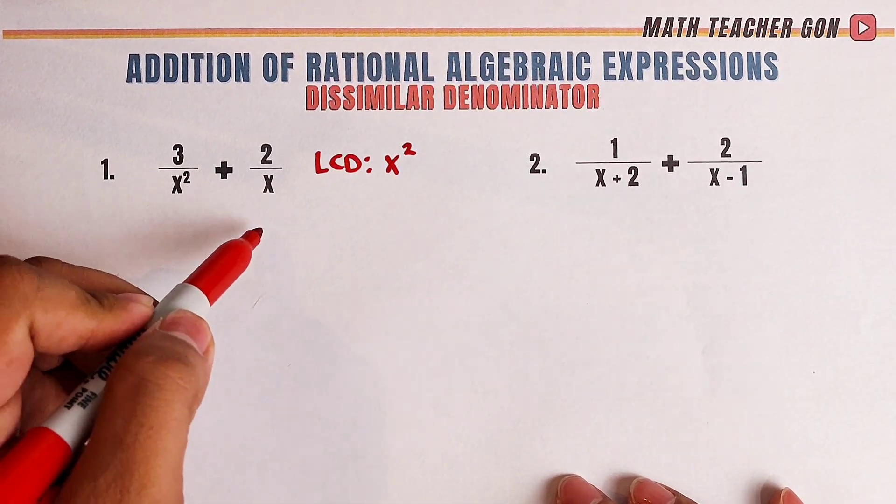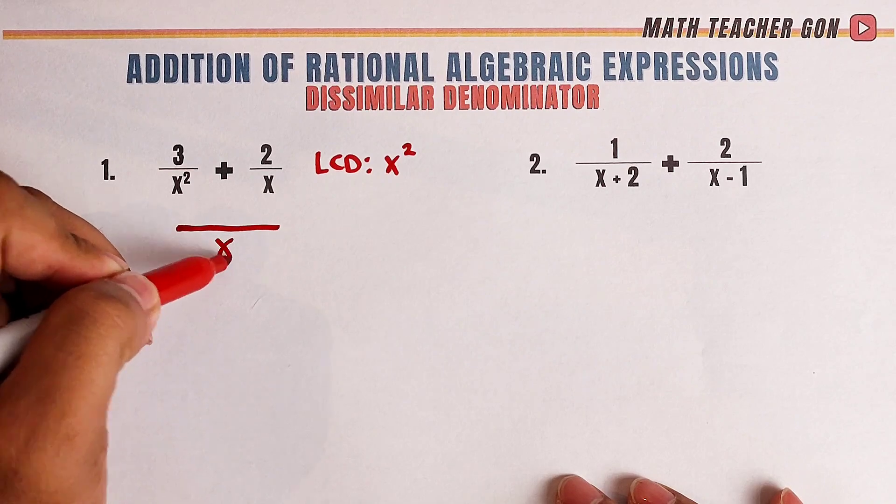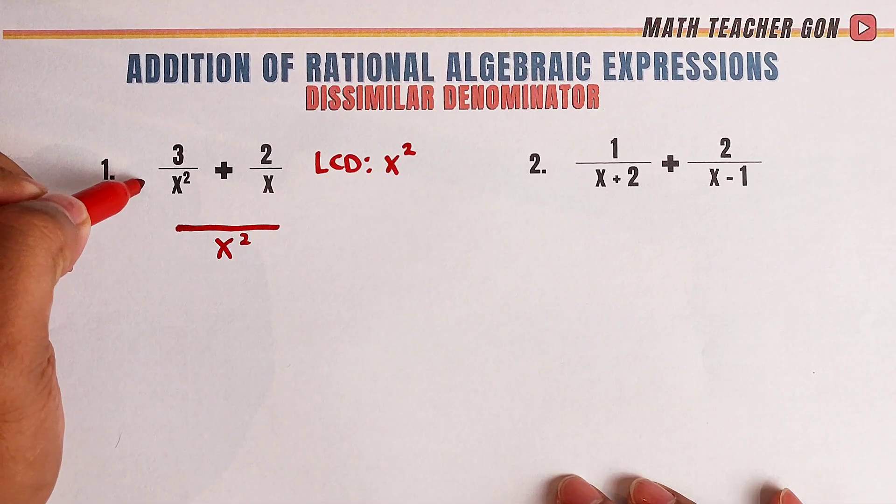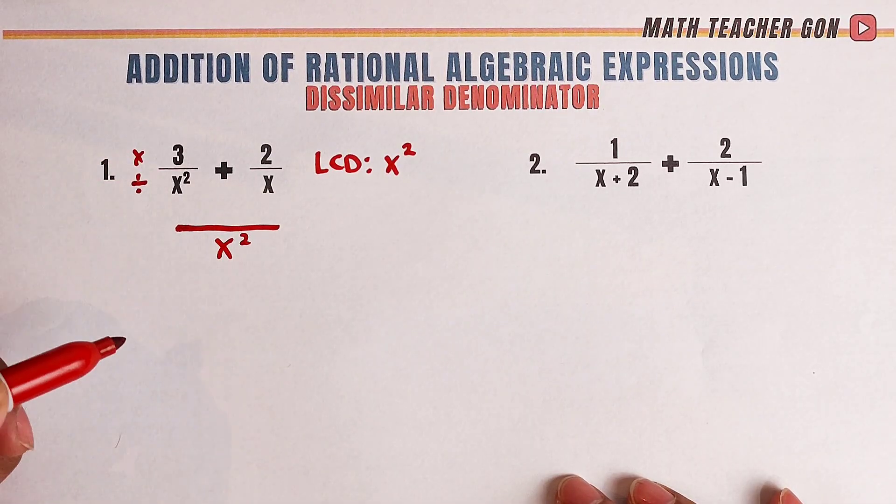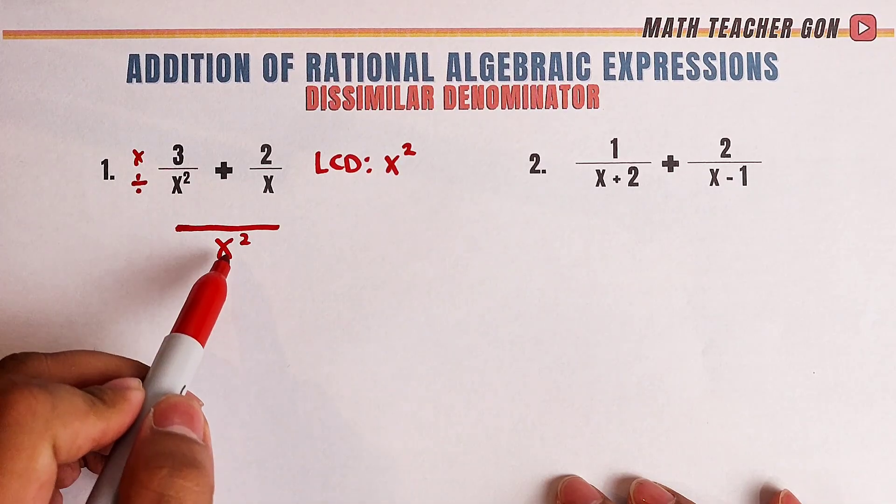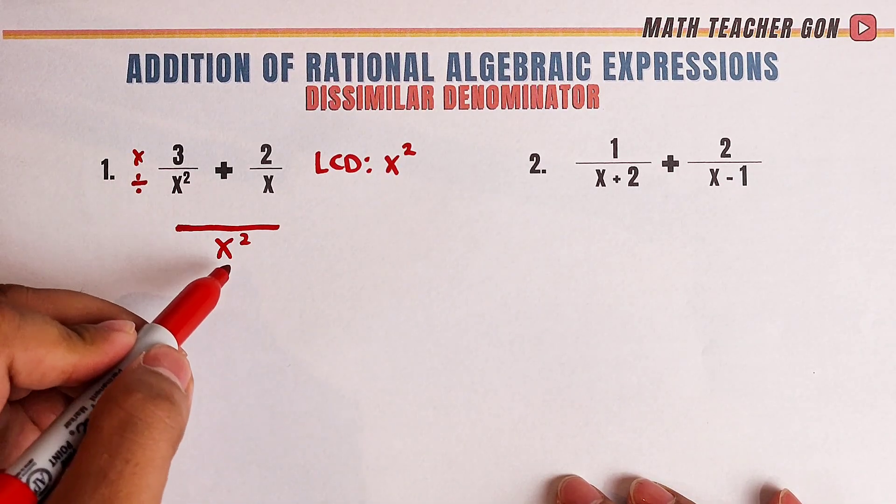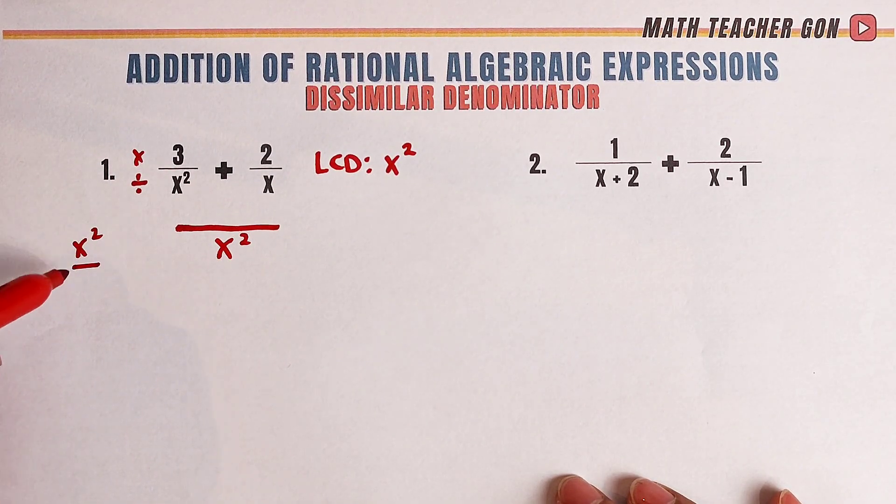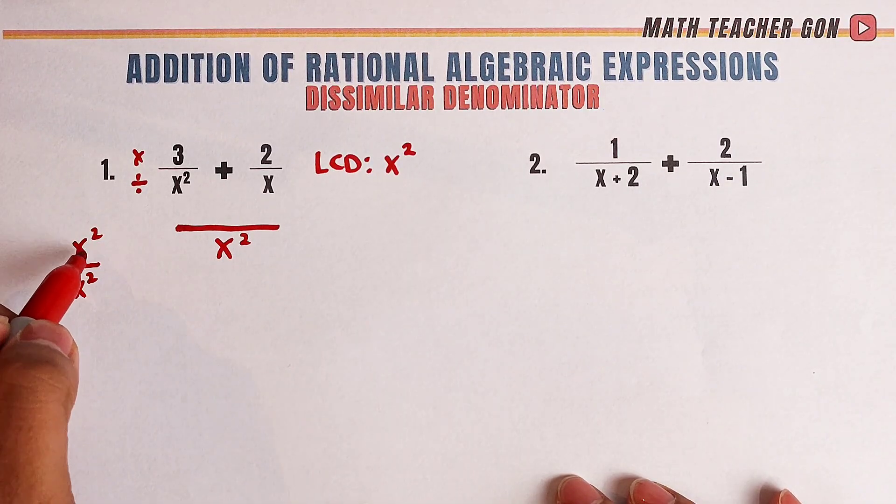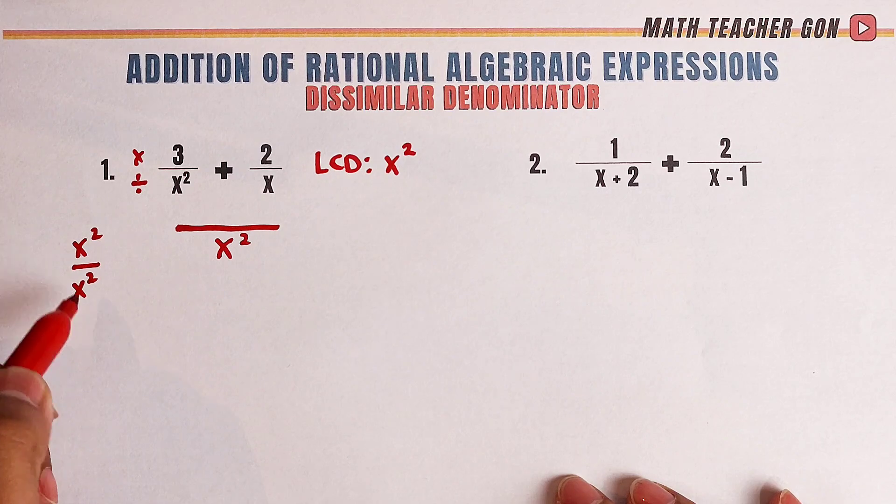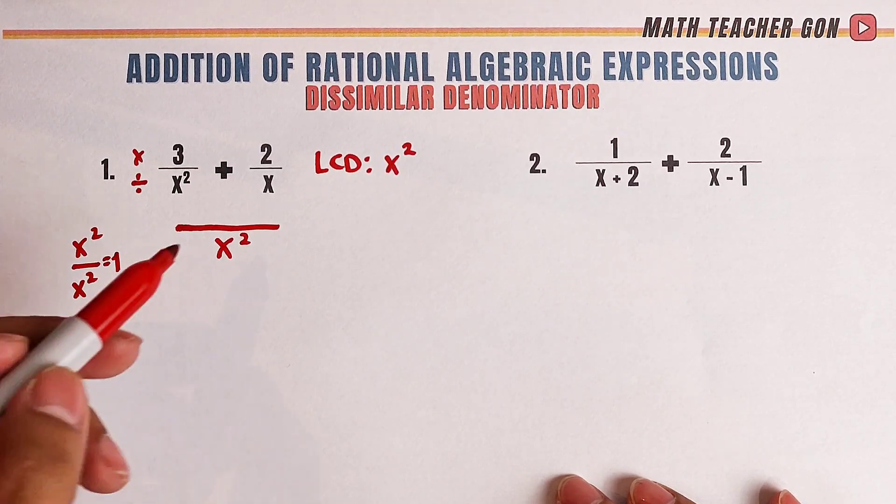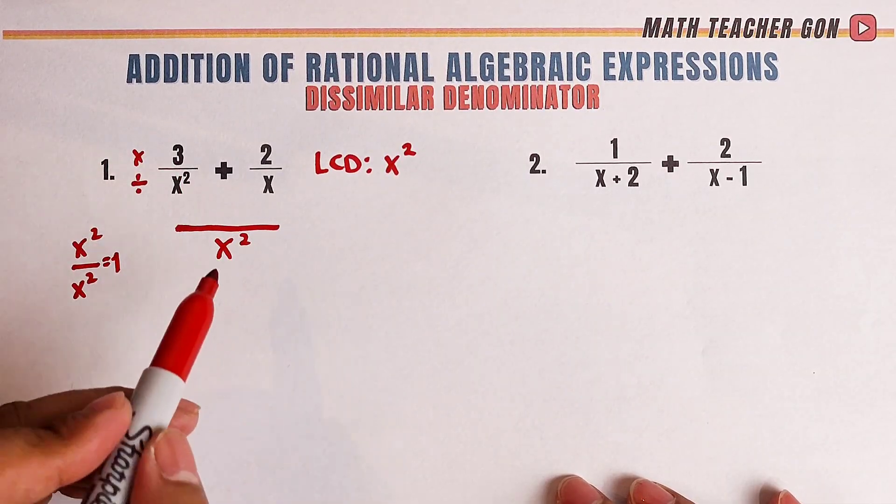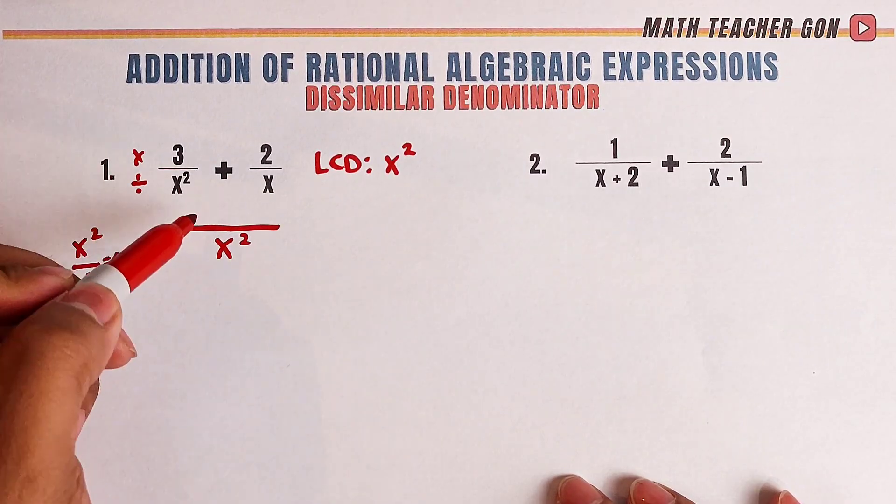So what we're going to do is to put here the x squared as our denominator and then always remember that the process is divide and multiply. First, we will divide this using the first denominator, x squared divided by x squared. So as you can see, the numerator and denominator are the same, meaning that is equal to 1. So x squared divided by x squared is 1 times 3, that would be 3.